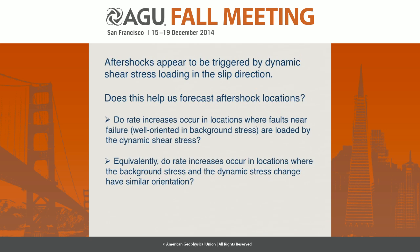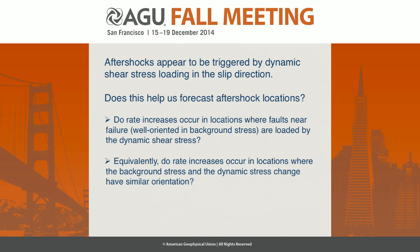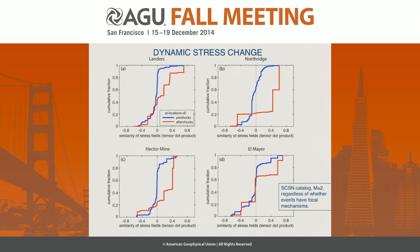If there does appear to be triggering by dynamic shear stress in the direction of slip of the triggered earthquakes, is it actually going to be helpful for forecasting earthquake locations? The question is: do rate increases occur in locations where faults near failure and well-oriented for failure in the background stress are loaded by these dynamic shear stresses? An equivalent way to test this is to ask: do rate increases occur in locations where the background stress and the dynamic stress change have similar orientations? That is, does the dynamic stress give an extra push in the slip direction to earthquakes already well-loaded for failure?